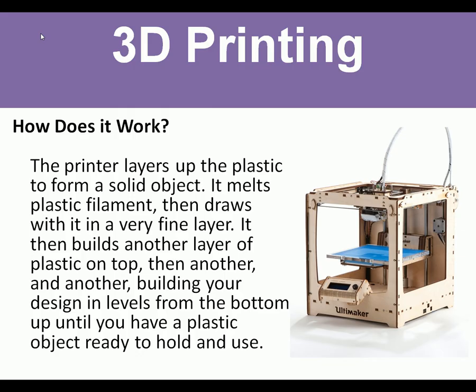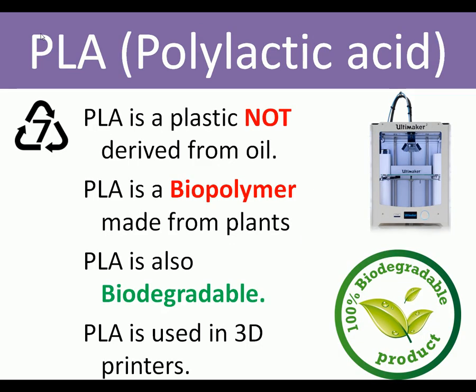3D printing is an important development in plastic — it builds up layers to form a solid object. It's a CAD process so needs a computer-drawn design. The plastic 3D printing uses is PLA. PLA is very important because it is not derived from oil — it is made from plants. PLA is a biopolymer and is also biodegradable; bury it in the ground and in 100 years it's gone, turned to dirt. PLA is used in 3D printers.